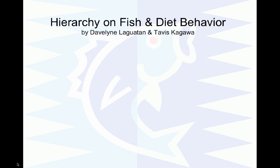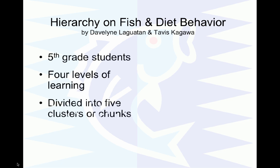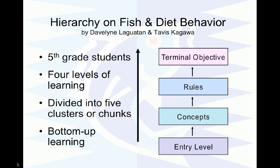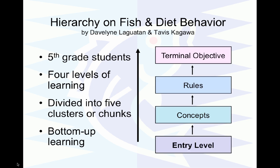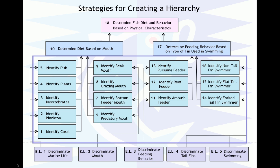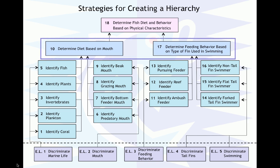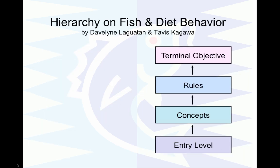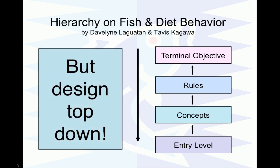Now I'll show you a hierarchy on fish diet and behavior designed in one of my classes — a module developed for fifth grade students. It had four levels of learning, divided into five clusters or chunks, and learning is always bottom up. Students already knew the entry behavior, so those were reviewed. Then they learned their concepts, then their rules, and finally the terminal objective or higher-order skill. Although you learn from the bottom up, you design from the top down.